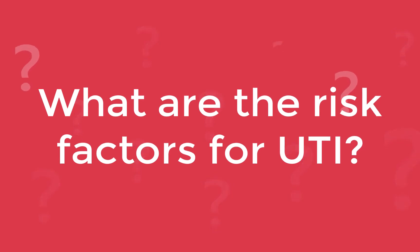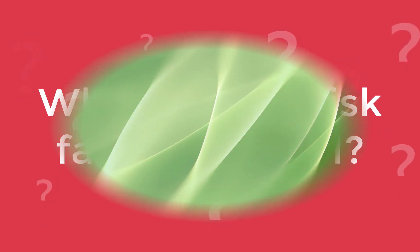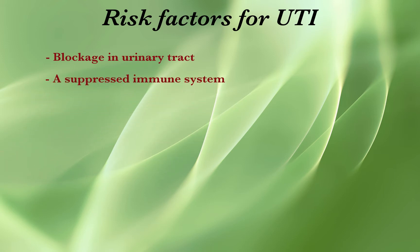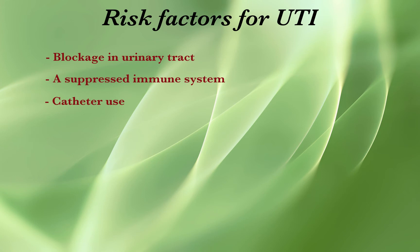Let us see what are the risk factors for UTI. First is blockage in the urinary tract — kidney stones or an enlarged prostate can trap urine in the bladder and increase the risk of UTIs. Next is a suppressed immune system: diabetes and other diseases that impair the immune system can increase the risk of UTIs. Another risk factor is catheter use. People who can't urinate on their own and use a tube or catheter to urinate have an increased risk of UTIs.